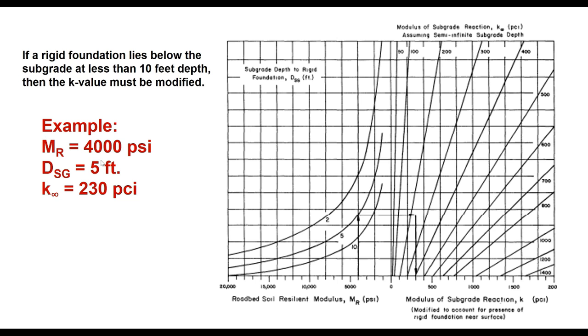Again we take an example. M_R value of roadbed soil is 4,000 psi and the depth of rigid foundation is 5 feet from the surface of the subgrade. K_infinite value which we estimated from earlier curve is 230 psi.